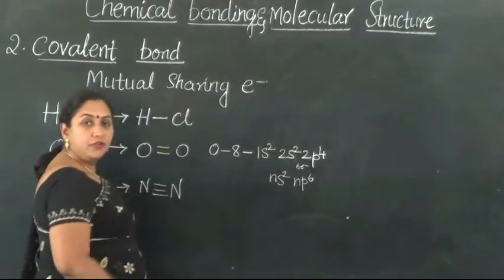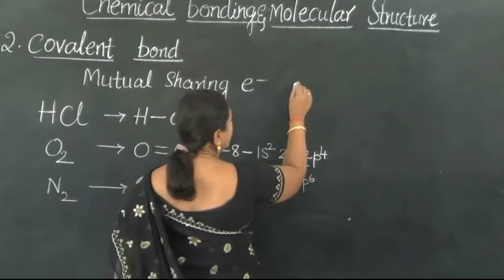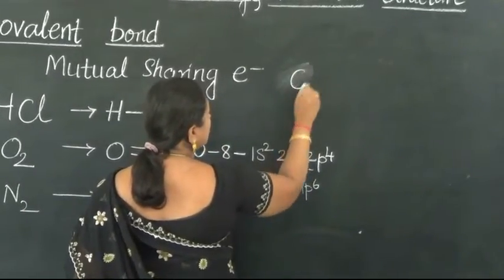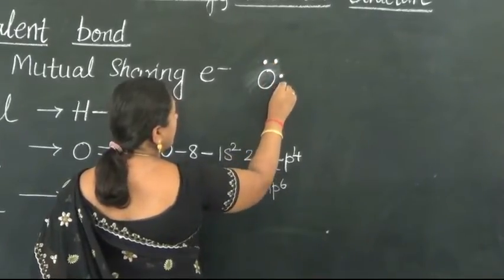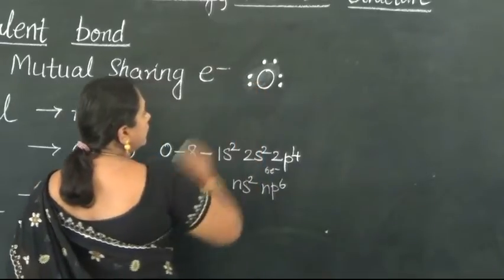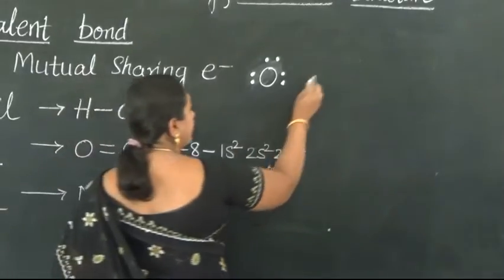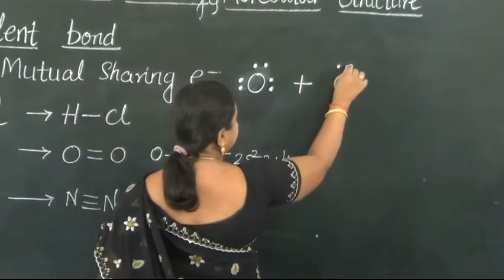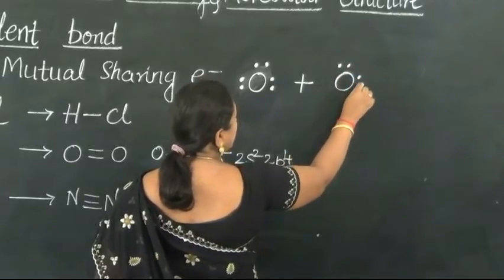Whatever is true for one atom of Oxygen will be the same for all atoms of Oxygen. So let us write the Lewis electron dot structure to understand how this covalent bond is formed between the 2 atoms of Oxygen. We place 6 dots around the Oxygen atom, and the other Oxygen atom also has 6 electrons.